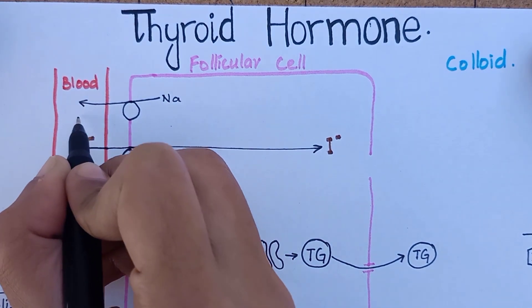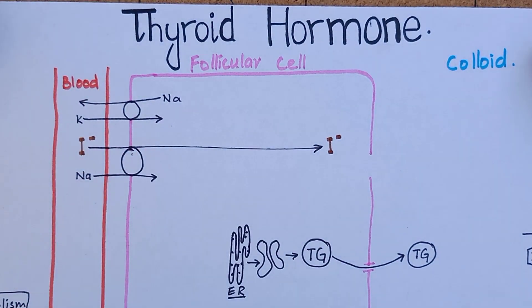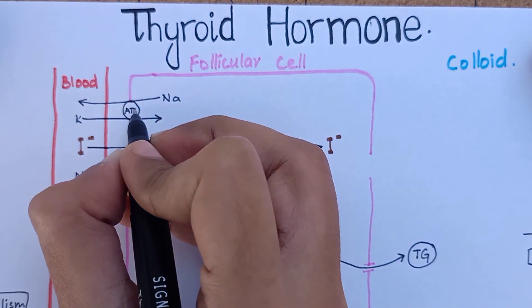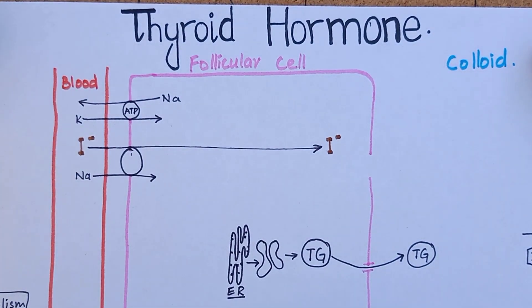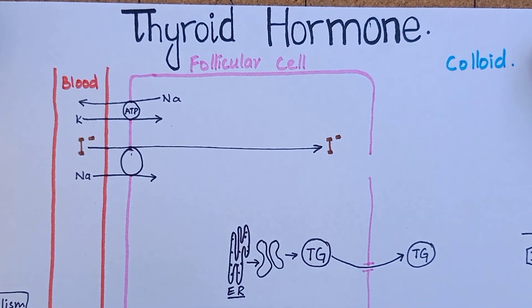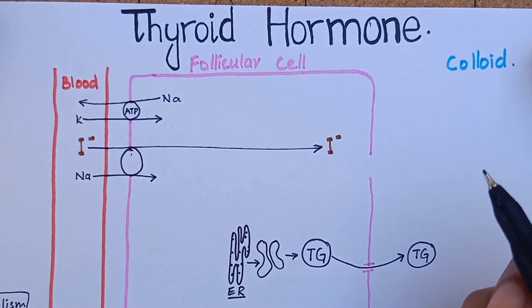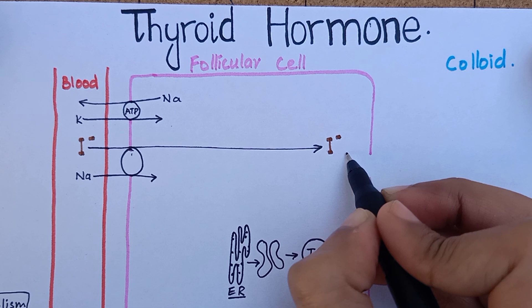The sodium-potassium ATPase pump transports sodium out of the cell, which establishes a gradient for facilitating diffusion of sodium into the cell along with iodide. This process of concentrating iodine into the follicular cell is called iodide trapping.